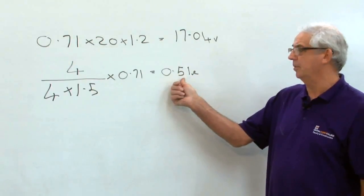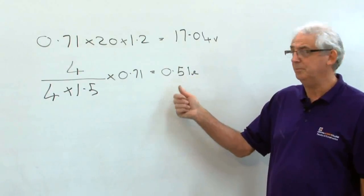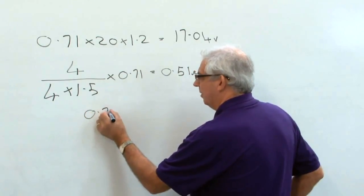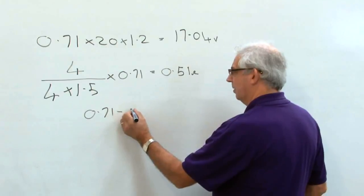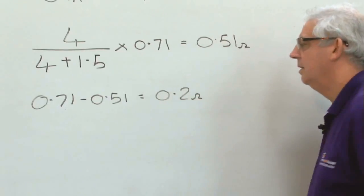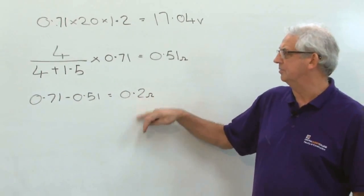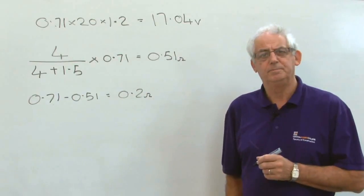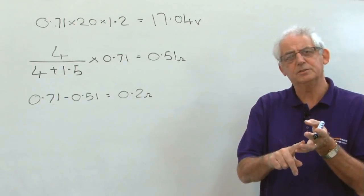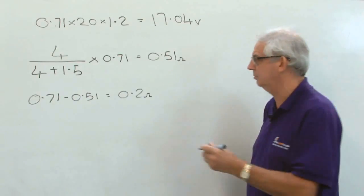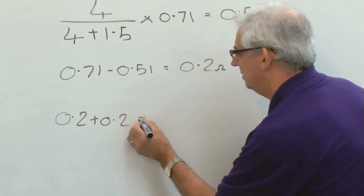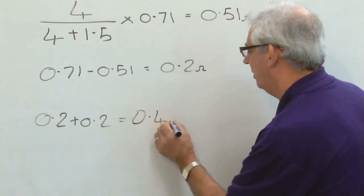This 0.51 ohms is the resistance of my CPC in this circuit. If I have an R1 and R2 of 0.71 and I take away 0.51, it gives me a resistance value of 0.2. 0.2 will be the resistance value of my line conductor. Of course I've got a line and I've got a neutral, so the resistance of my 4mm cable for line and neutral will be 0.2 plus 0.2 which equals 0.4 of an ohm.